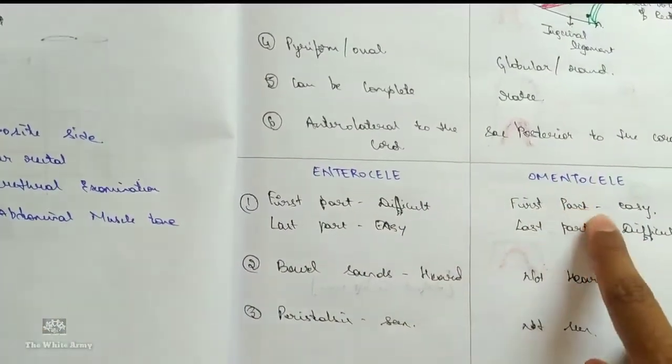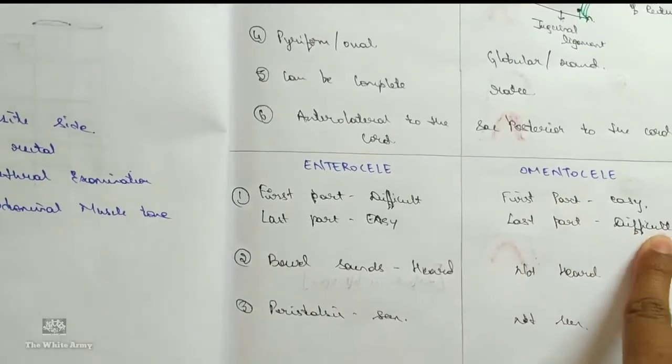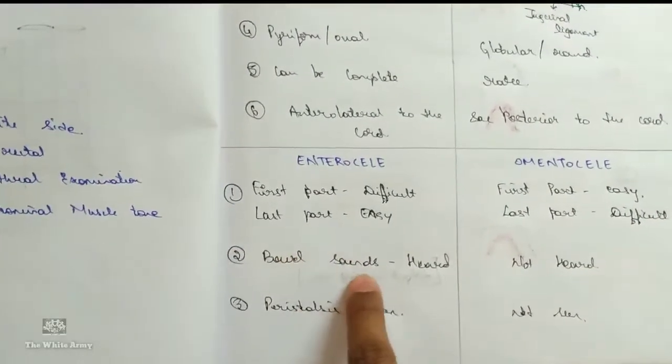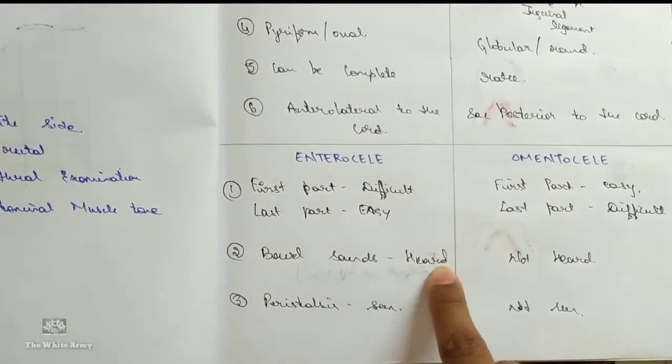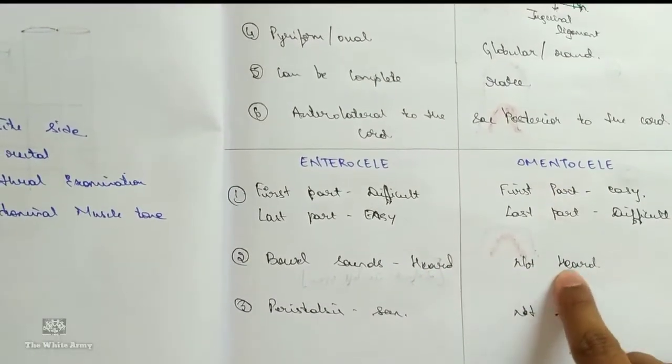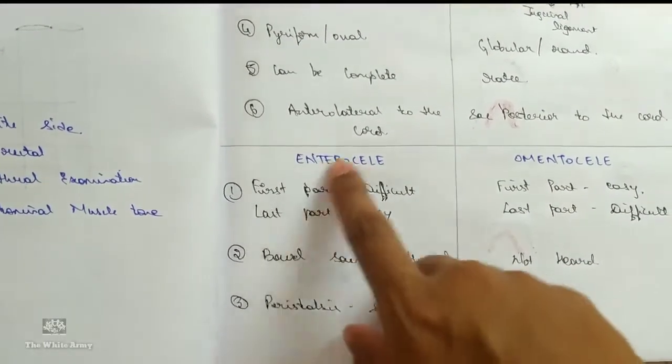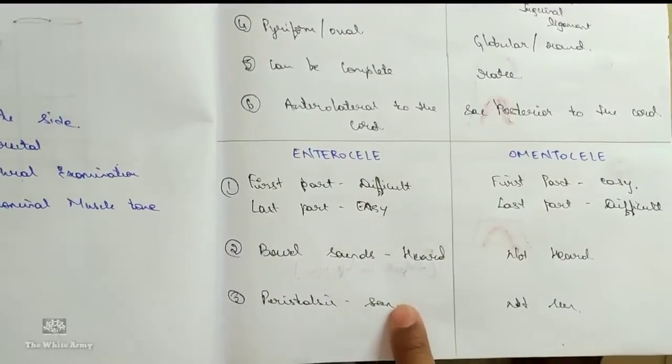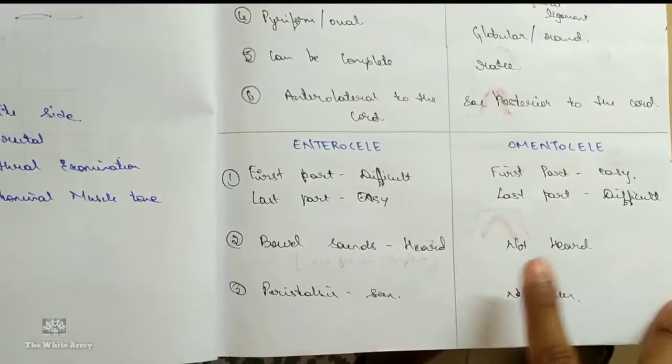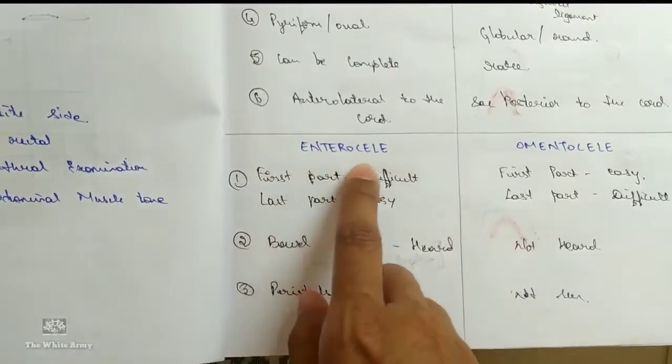So it is difficult for the first part but once the contents are gone second part is very easy. Omentocele first part is easy, second part is difficult. Bowel sounds are heard in enterocele. Omentocele it is not heard. Peristalsis can be seen in enterocele as it is intestine. In omentocele it is not seen.